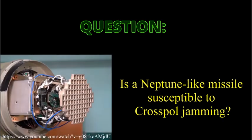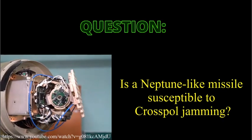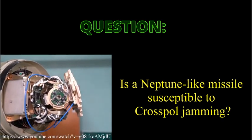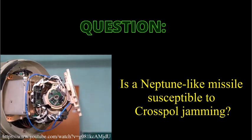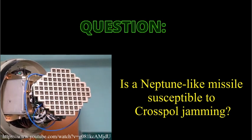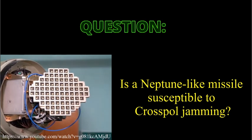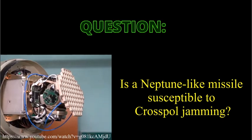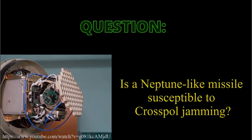So here's the question: does the Neptune seeker antenna, covered by an ogive radome, have a sufficiently high cross-polar gain that the seeker could be susceptible to cross-pol jamming, all things otherwise being equal?